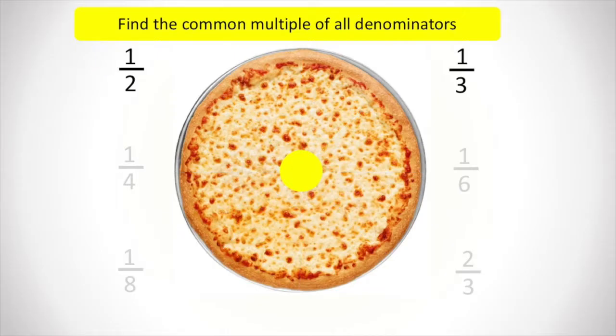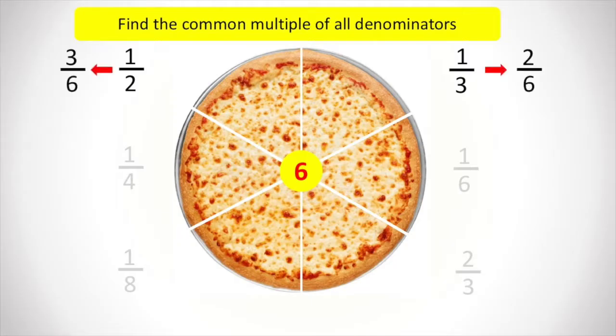In the next example, we want to split the pizza into a half and a third. Let's see what's the lowest common multiple of two and three. It is six. And now, the one who needed half pizza will get three pieces and the one who needed one third pizza will get two pieces.